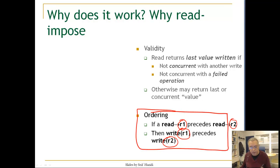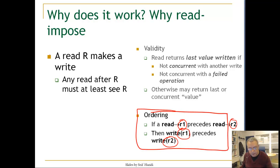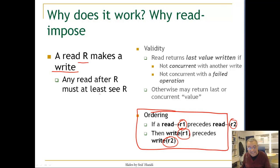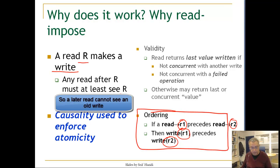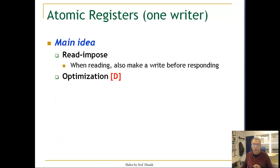This is exactly what the read-and-impose tries to guarantee. When a read R makes a write, it guarantees that any read after R must at least see R. Here we are using causality to inform atomicity. So let us look again at the atomic register.